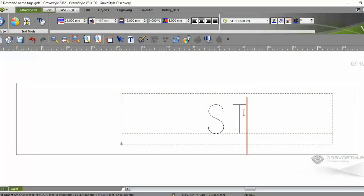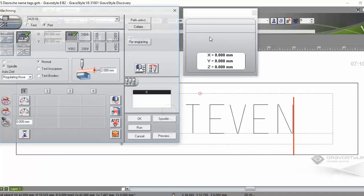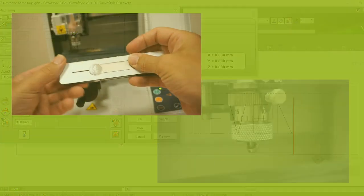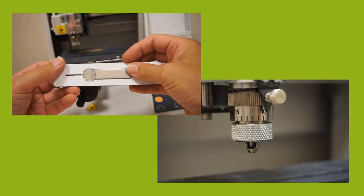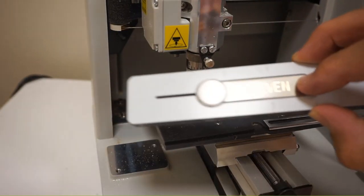We will cover entering the badge dimensions and typing the name within the software, sending the engraving instructions, using the plastic badge holder, setting the cutting tool and finally engraving.